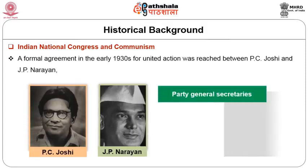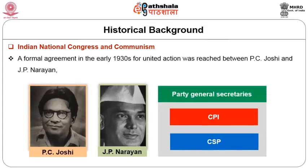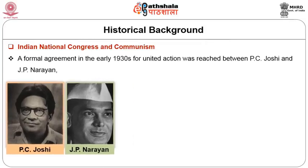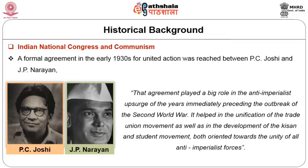Central to this perspective was united action between the reorganized All India leadership of the Communist Party of India and the Congress Socialist Party. A formal agreement in the early 1930s for united action was reached between PC Joshi and JP Narayan, the general secretaries of CPI and CSP respectively. That agreement played a big role in the anti-imperialist upsurge of the years immediately preceding the outbreak of the Second World War. It helped in the unification of the trade union movement as well as in the development of the Kisan and student movements, both oriented towards the unity of all anti-imperialist forces.